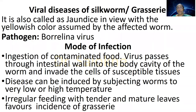The next type of silkworm disease is viral disease, also called grassary. Due to the yellow color assumed by affected worms, it is also called jaundice disease. The pathogen is Borrelina virus. Mode of infection is ingestion of contaminated food. The virus passes through the intestinal wall into the body cavity and invades cells of susceptible tissues. The disease can be induced by very low or high temperature, or irregular feeding with tender and mature leaves.